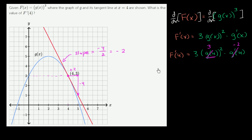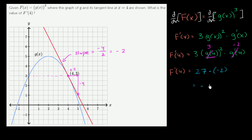So this simplifies to f prime of 4 is equal to 3 times 3 squared — which is 9 — times 3 is 27, times negative 2, which is equal to negative 54. So f prime of 4 is negative 54.